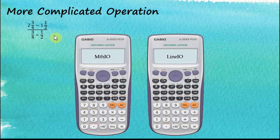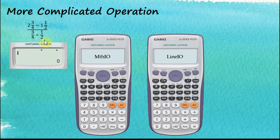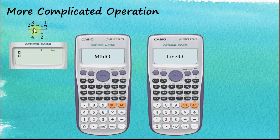This is quite a complicated operation involving fractions within fractions. For Math input, we can see this is a fraction whose numerator itself is the result of operations on two other fractions. We start with the big outer fraction first. The numerator involves a mixed number, so we insert the mixed number container and enter 2, 3, 4, then move the cursor right, add a minus sign, then Shift fractions for another mixed number container and enter 1, 1, 2.